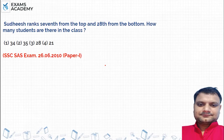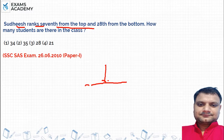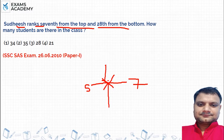Okay guys, question: a student is ranked 7th from the top and 28th from the bottom, and both are the same position. How many students are there in the class?